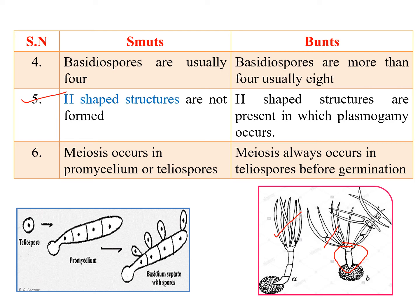The H-shaped structures are meant for plasmogamy — that is, fusion of cytoplasmic contents. Karyogamy will not take place here, and dikaryosis also will not take place; only the cytoplasmic contents fuse — that is plasmogamy. After that, meiosis occurs. In smut fungi, meiosis occurs either in the promycelium or in the teliospore. But in bunt fungi, meiosis always occurs in the teliospore — before germination, meiosis takes place, resulting in the production of haploid spores.